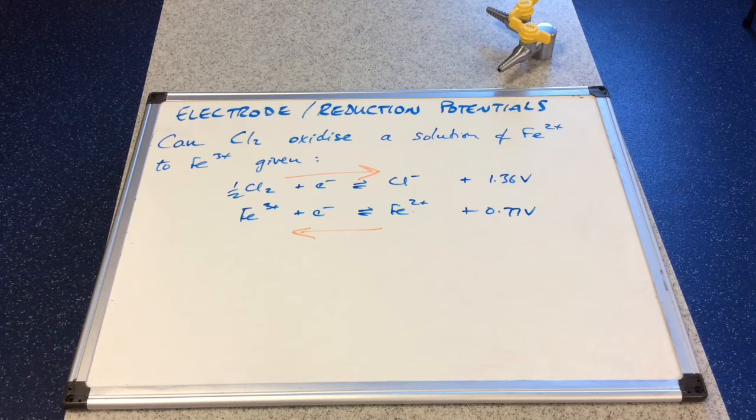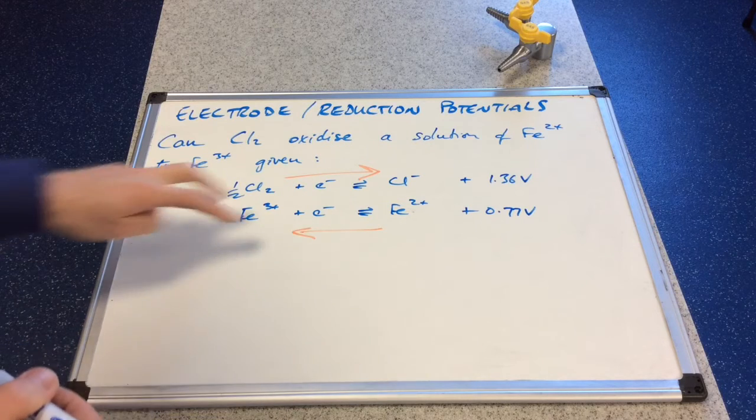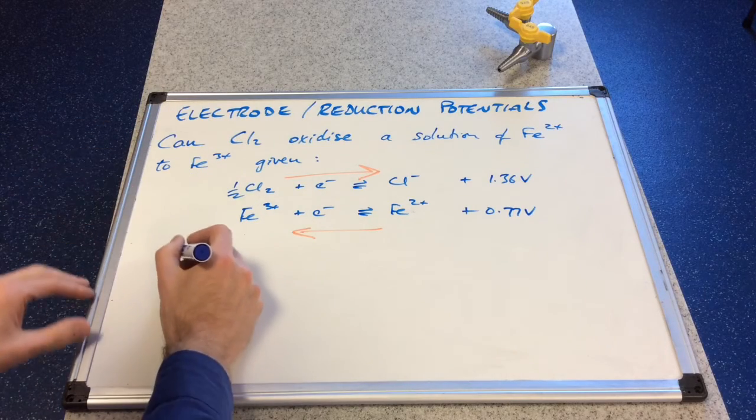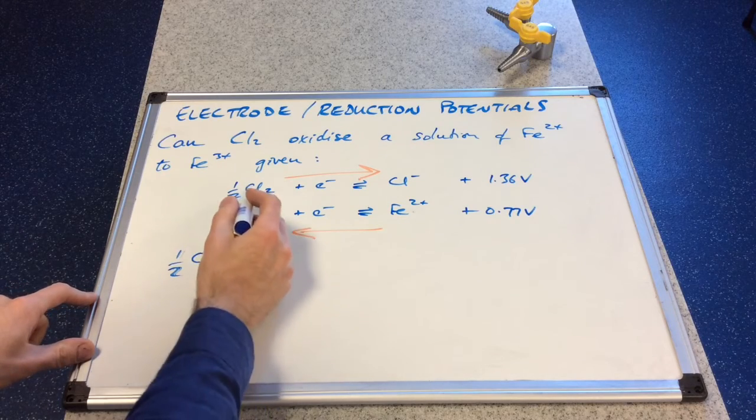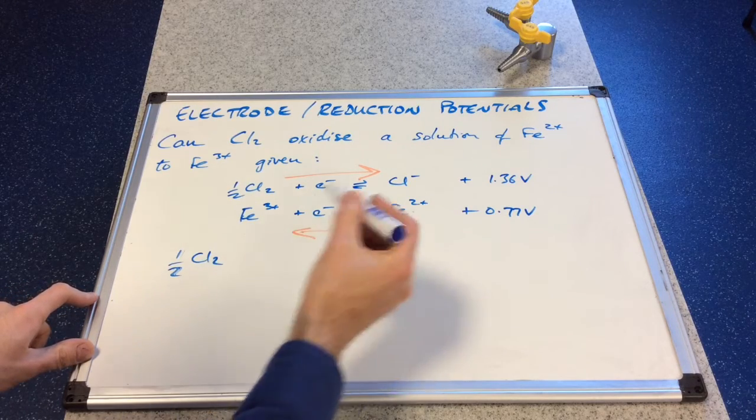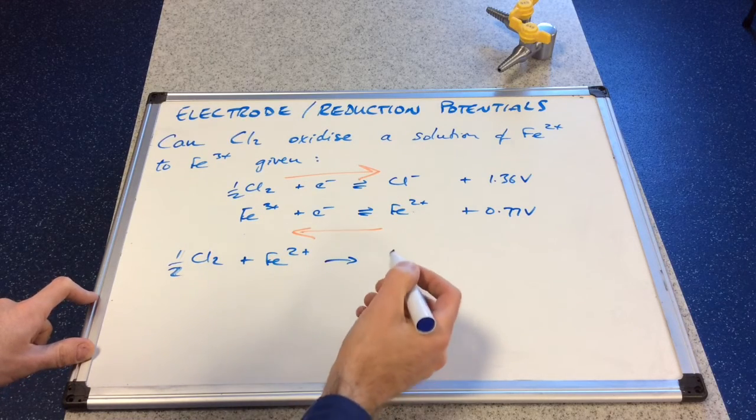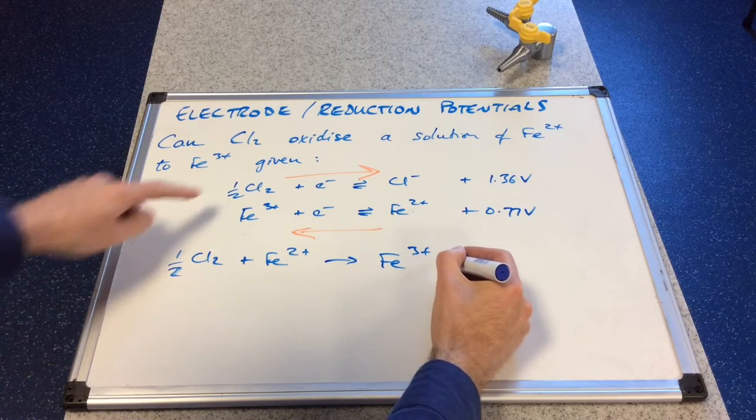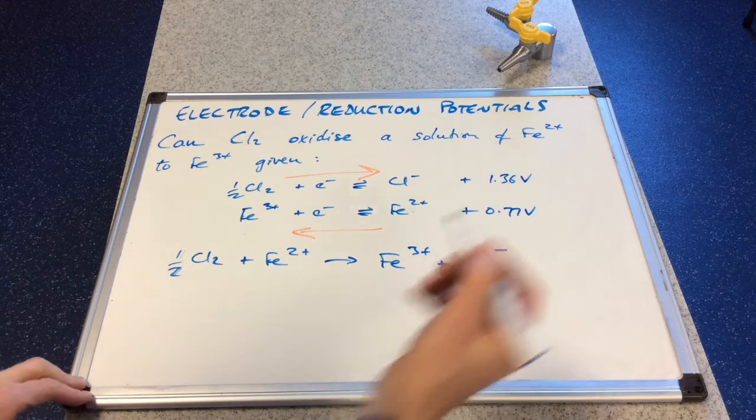Now establish, well what would the reaction be? So the electrons are the same, so we don't need to multiply anything. So we've got half, Cl2 is going to steal an electron from the Fe 2 plus and convert that to Fe 3 plus. And the chlorine gaining electron would become a chloride ion.